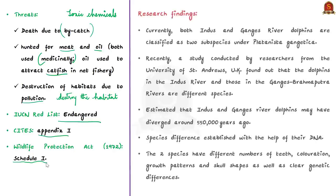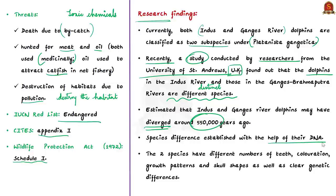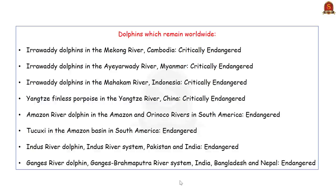Now let us talk about the recent research. Currently both Indus and Ganges River Dolphins are classified as two subspecies under Platanista gangetica. But as per a recent study conducted by a team from the University of St. Andrews UK, the dolphins in the Indus River and those in the Ganges Brahmaputra rivers are sufficiently distant to be classified as species in their own right. It estimates that Indus and Ganges River Dolphins may have diverged around 550,000 years ago. The difference in their species was established with the help of their DNA. Further, the research also showed that the two river dolphin species have different numbers of teeth, coloration, growth patterns and skull shapes as well as clear genetic differences. For your additional information, other than Indus Dolphin and Gangetic Dolphin, the following river dolphins remain worldwide. They include the Irrawaddy Dolphins, the Yangtze Finless Porpoises, the Amazon River Dolphin and the Tucuxi.